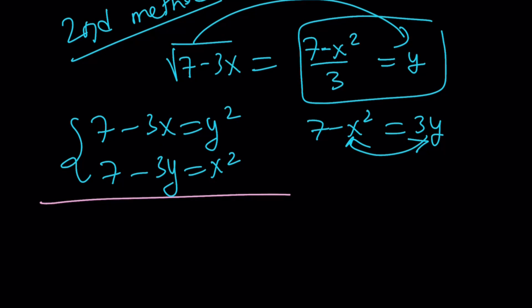So we're going to go ahead and do the following. We're going to subtract these two equations. Or you can do the following. How about this? 7 equals 3x plus y squared. But 7 is also equal to 3y minus x squared. So these two things are equal. Awesome.